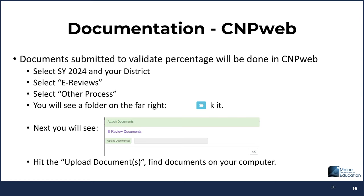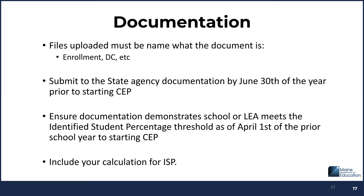To upload in CNPweb: log into your district, select 2024 and your district, then at the top left select e-reviews. Select 'other process' — this is not an administrator review. You'll see a blue box with a folder icon on the far right; click that, then upload the data. Select upload, find the data, and submit it. When submitting your data, please name it clearly — identify what the document is: 'this is my enrollment,' 'this is my DC list,' 'this is my Head Start list.' Don't leave whatever default name was assigned.